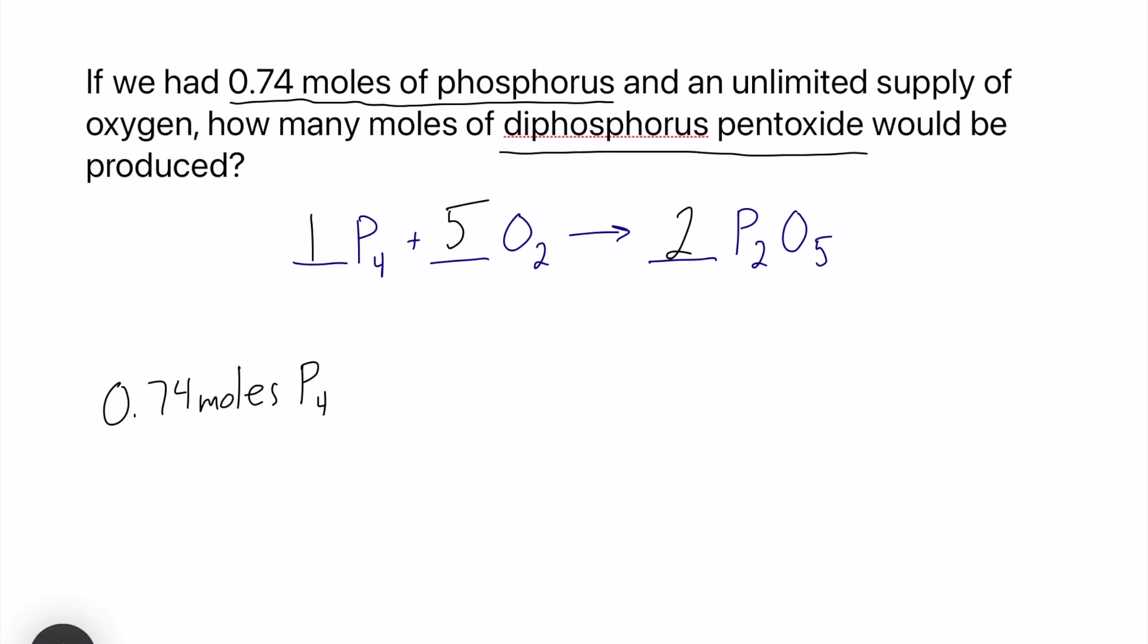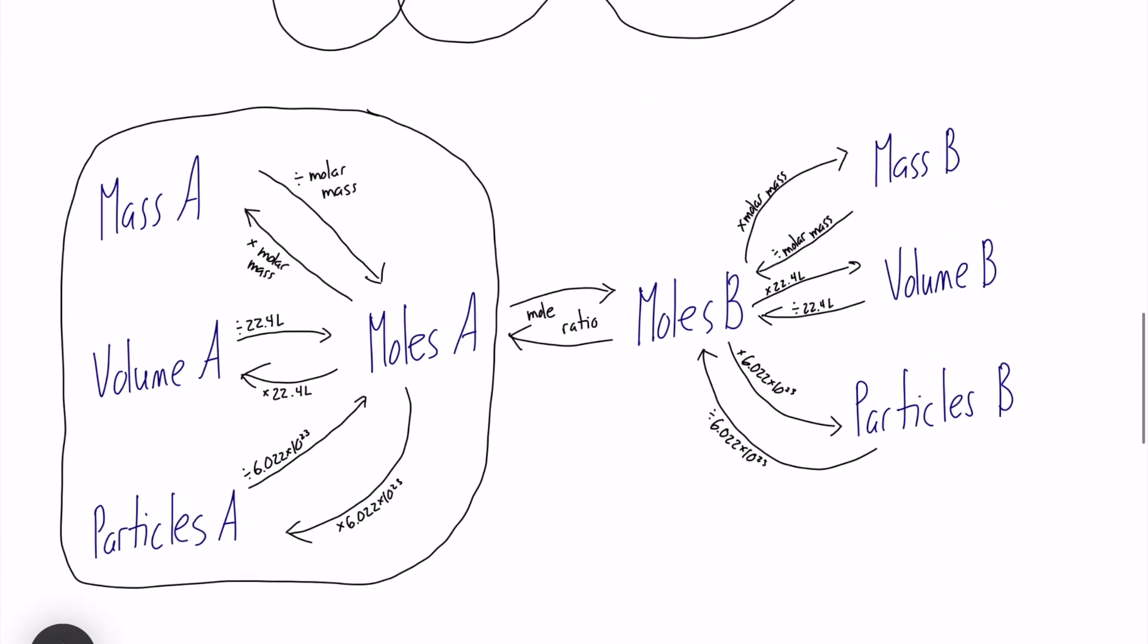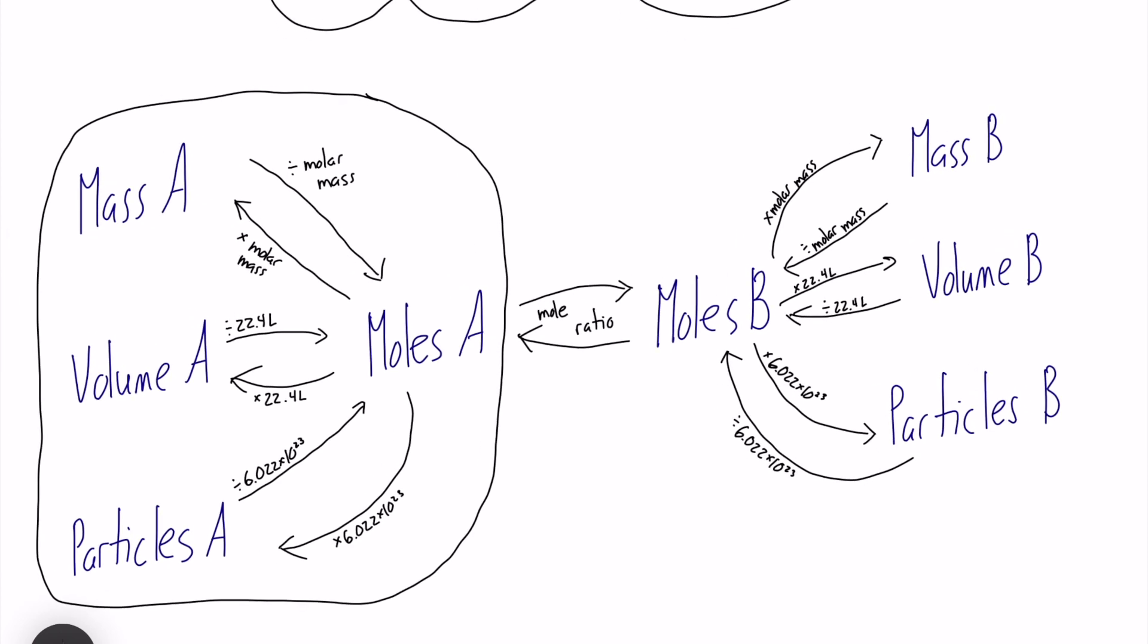Where this flowchart comes in, we can scroll on up to the top here, or to this flowchart. We need to identify where we are starting and where we want to end. We are given moles of phosphorus, and the question wants us to figure out moles of diphosphorus pentoxide.